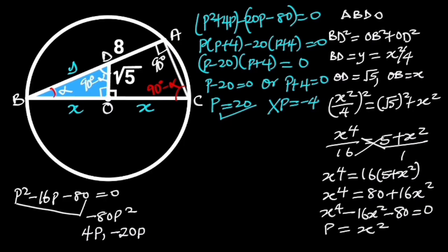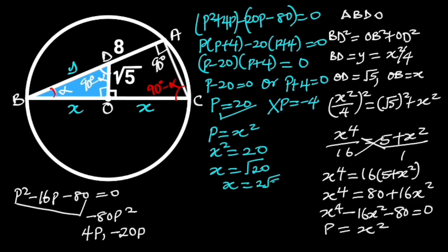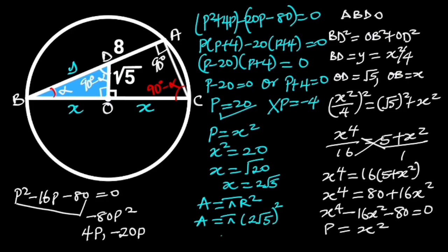Recalling that P = x², it follows that x² = 20. Taking the square root of both sides gives x = 2√5, and this is the radius of the circle. To find the area: area = πr² = π(2√5)² = π × 20. Hence, the area of the circle is equal to 20π square units.